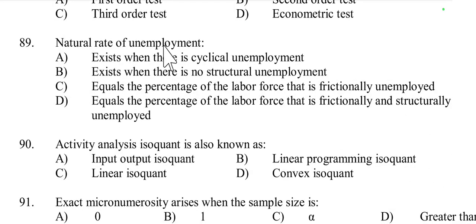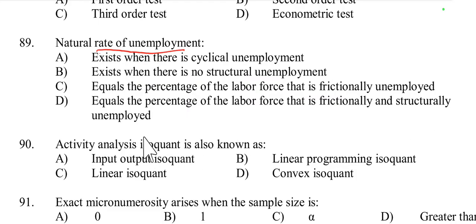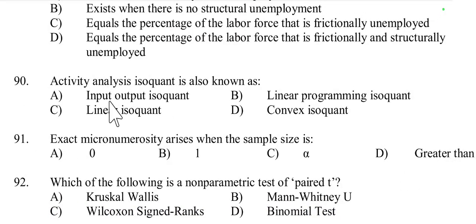Question number 89: The natural rate of unemployment exists when there is a labor force that is frictionally and structurally unemployed. The natural rate of unemployment (NRU) equals the percentage of the labor force that is frictionally unemployed — meaning between jobs — and structurally unemployed — due to changes in the structure of the economy.